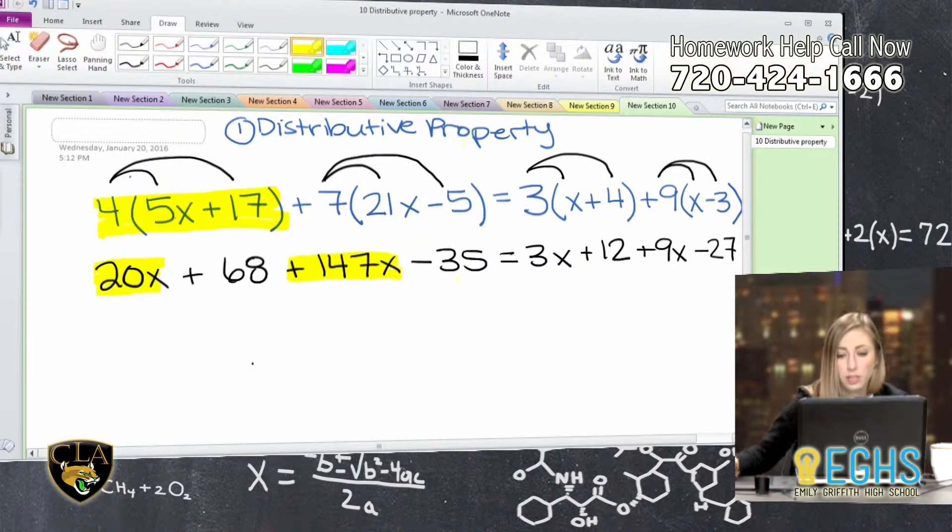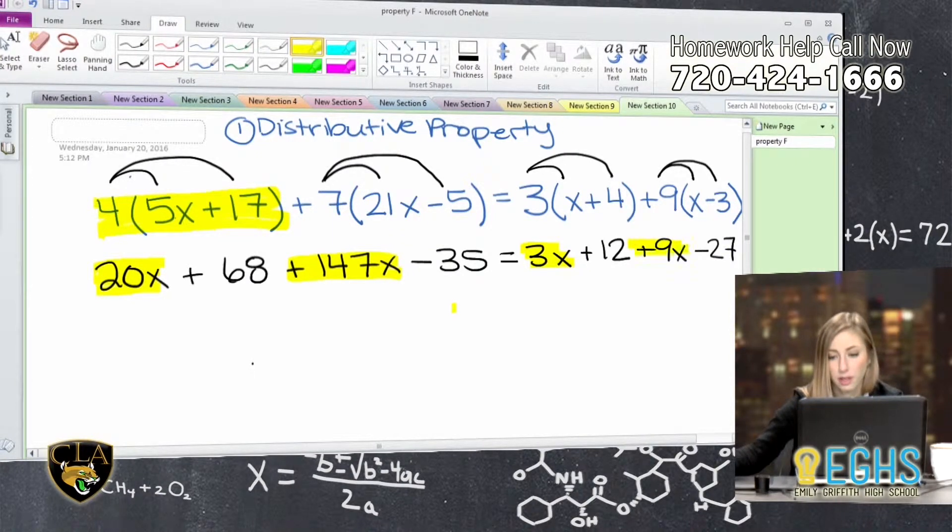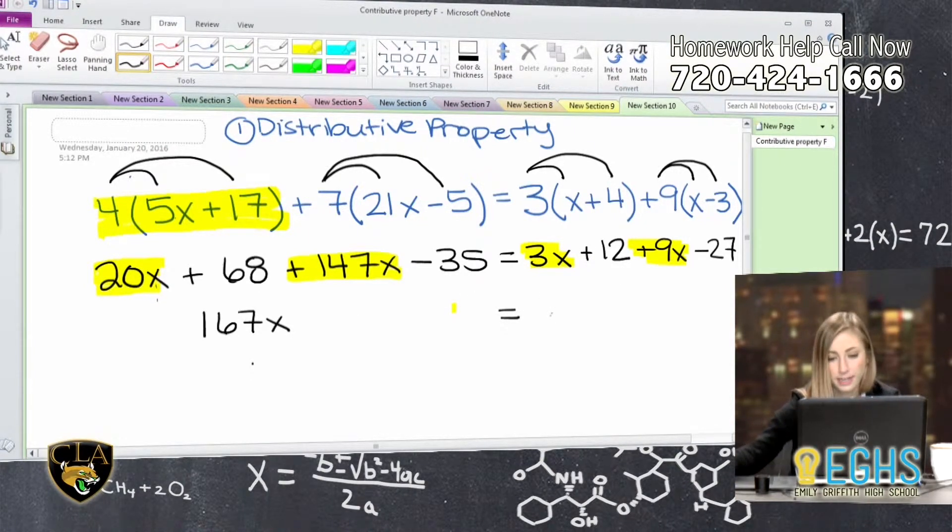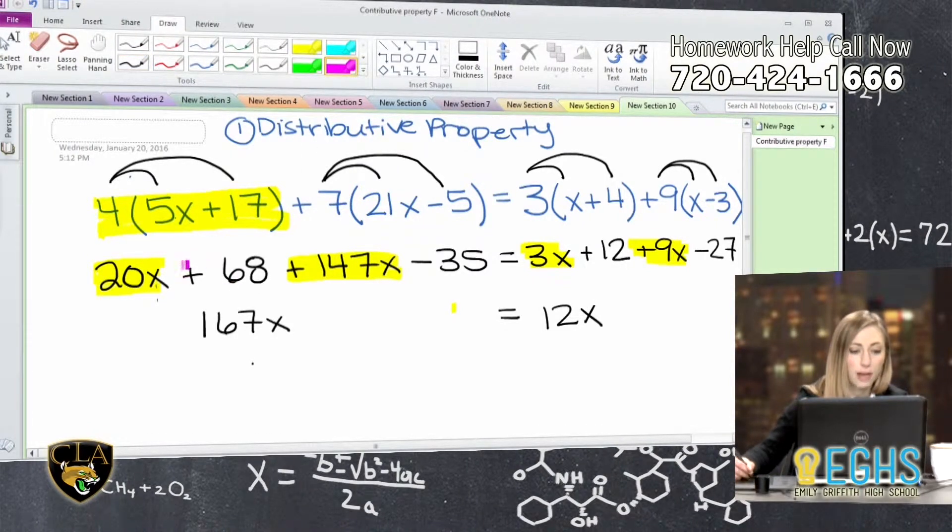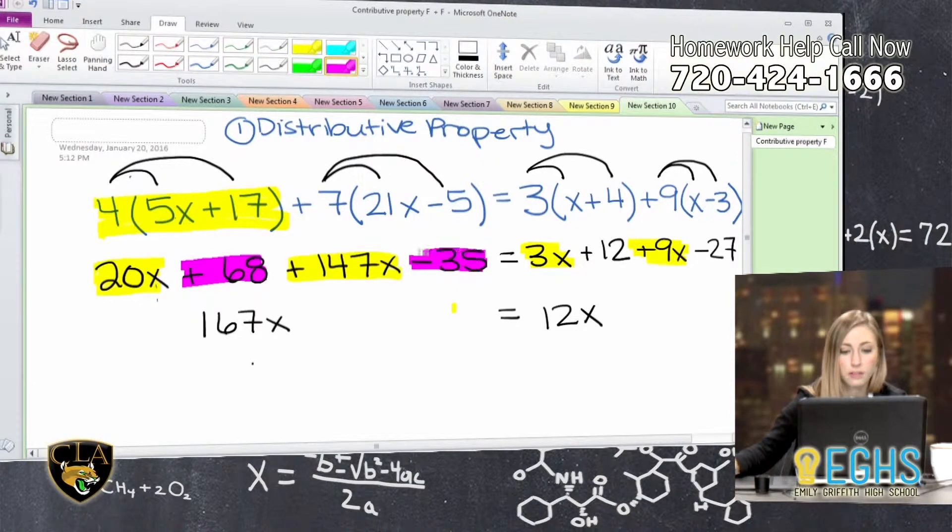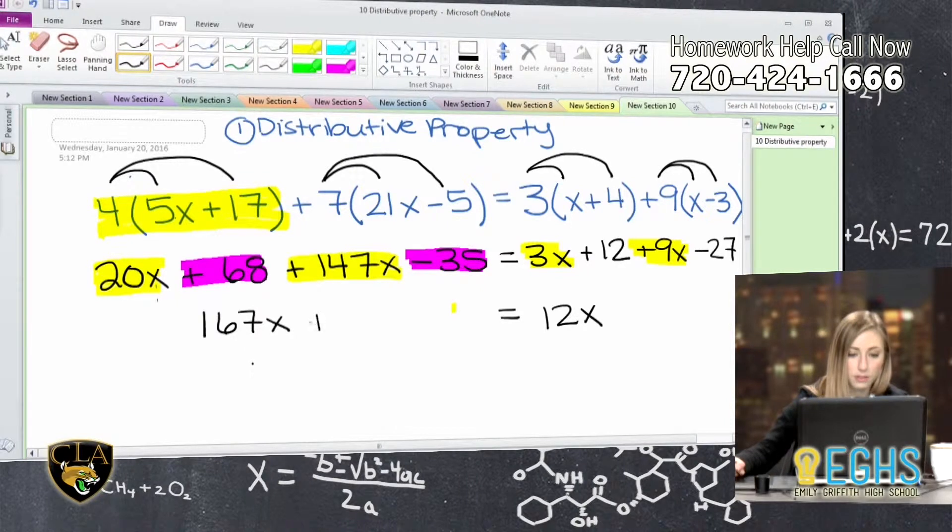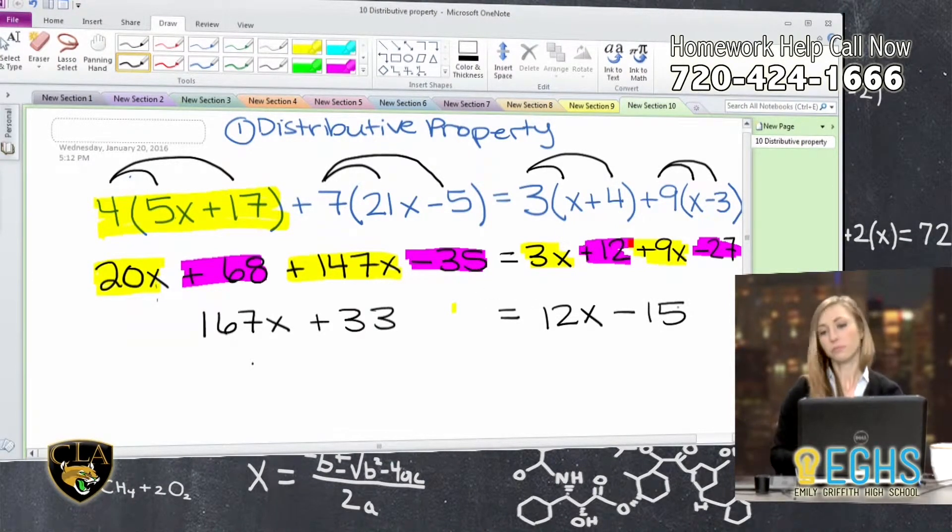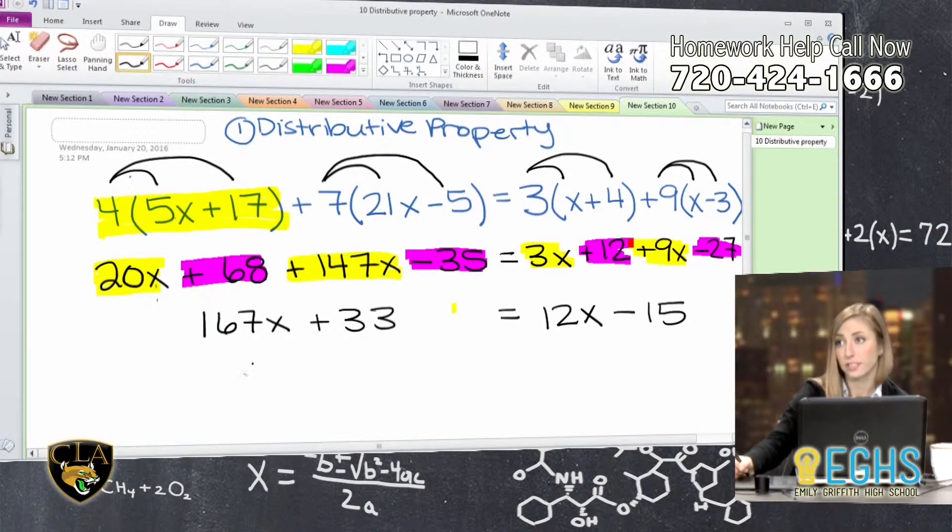So on the left side, I'll combine the 20x and the 147x. And then on the right side I'm going to combine the 3x and the plus 9x. And we do always consider the signs with that. So 20x plus 147x is going to give me 167x. And then on the right side I have 3x plus 9x, that gives me 12x. Then we're going to have to combine the other terms, which are constants. So we have positive 68 and negative 35, which is going to give us positive 33. So plus 33. And then on the right side of the equation, we have positive 12, negative 27, and that's going to give us negative 15. And now, as you can see, we have a much simpler equation.